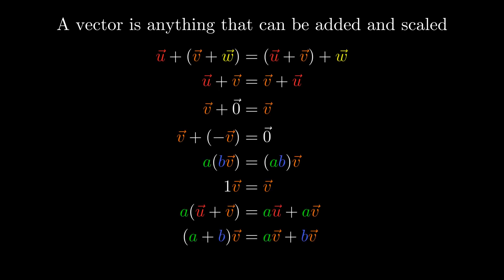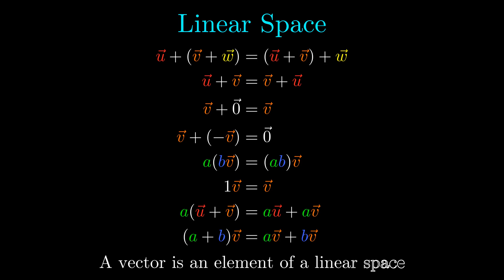Now, because the job of a mathematician is to make simple things complicated, this isn't quite the definition that they use. They say that a vector is anything that can be added and scaled that also follows all of these algebraic rules. Notice that to satisfy these conditions, we also need to have a zero vector and have the definition of the negative of a vector. If we have a set that has operations that satisfy these conditions, we call that set a linear space. This is the mathematician's answer to what a vector is. A vector is an element of a linear space.